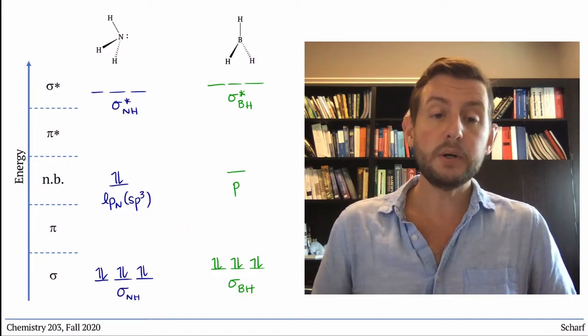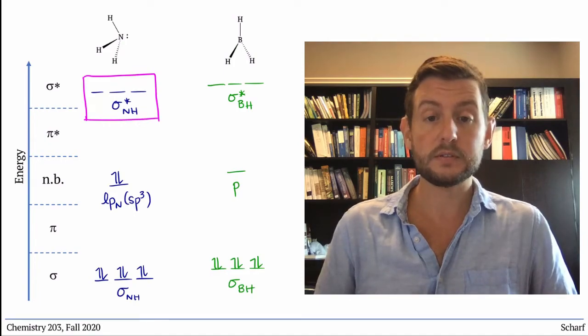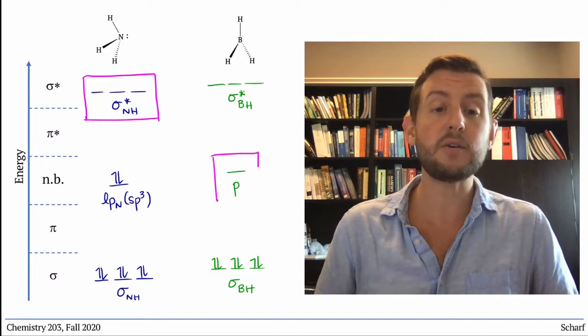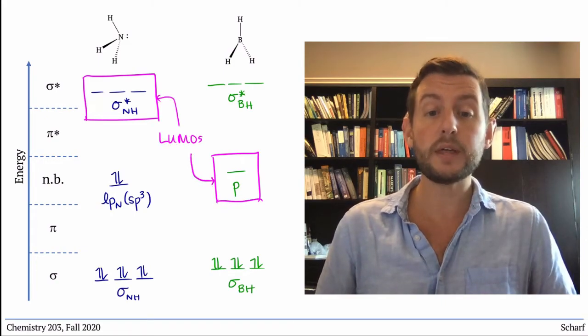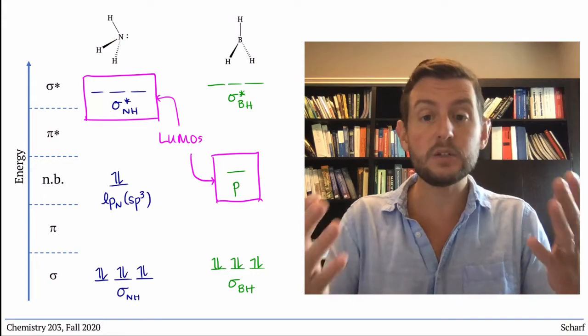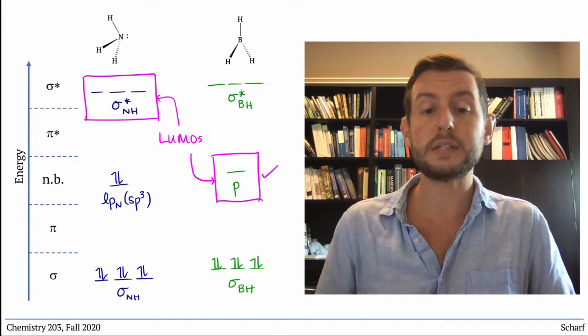The LUMOs of ammonia are those NH sigma star orbitals, while borane's LUMO is its empty P orbital. Since borane has a lower energy LUMO than ammonia, it's more likely to accept electrons and act as an electrophile or Lewis acid.